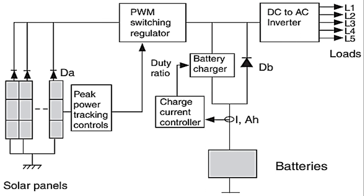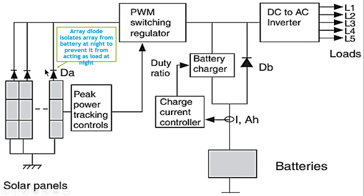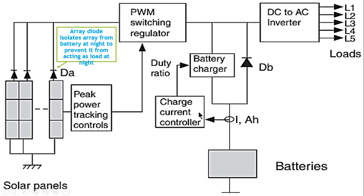Here is an example of the overall system. This is the solar panel, and these are the array diodes which isolate the array from batteries at night, preventing it from acting as a load. These diodes ensure unidirectional current flow. This is the PWM switching regulator which ensures the maximum power point tracking controller operates at optimal conditions, and this is the DC to AC converter which supplies the connected loads.